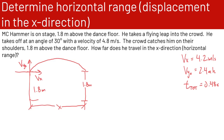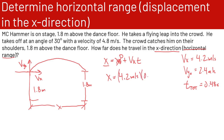Now we're trying to find the horizontal range — how far does MC Hammer travel in the x direction? Using x equals x naught plus Vx times t, with x naught equal to 0: x equals 4.2 meters per second times 0.48 seconds, giving a horizontal range of 2.0 meters.